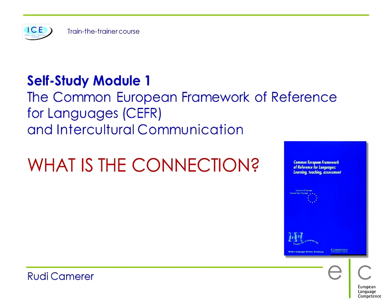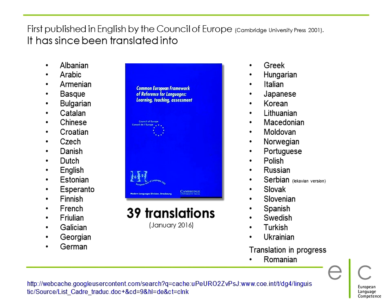To answer the first question — why is the CFR so important — you will probably be aware that the CFR was first published by the Council of Europe in 2001 in English. This did not mean, however, that the CFR was meant primarily for the English language, which is made quite clear by the fact that as of today there are 39 translations of the CFR available, some into languages which are clearly not European, such as Arabic, Chinese, Japanese or Korean. The fact that educational authorities in so many countries have adopted the CFR as the basis of their language education policies underlines the importance it has gained today.